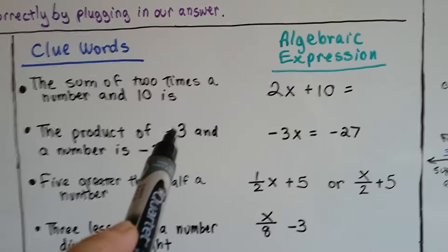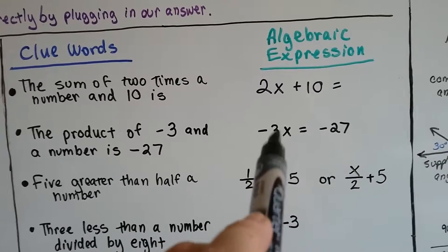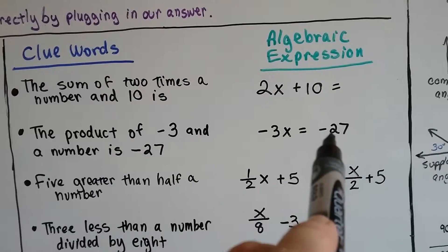The product of negative 3 and a number is negative 27. So negative 3 times something equals negative 27.